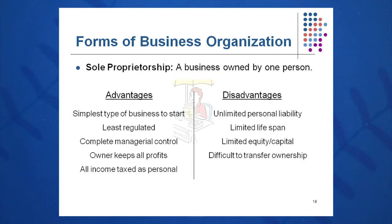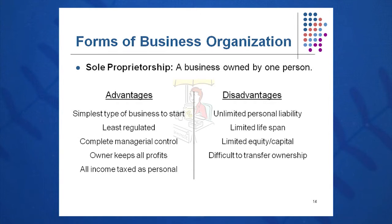In a sole proprietorship, some advantages are that it's very simple to form — you can basically use your Social Security number to start one. Your income gets taxed along with your personal income, and it's not very regulated; just get a business license and start your business. Some disadvantages: you have unlimited personal liability, so if anything goes wrong you can be sued. There's also a limited lifespan and limited capital, as the amount that can be invested is limited to your personal wealth.